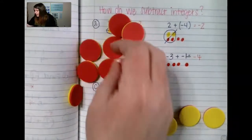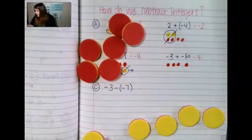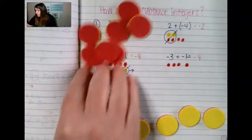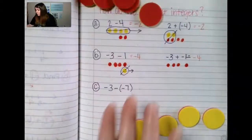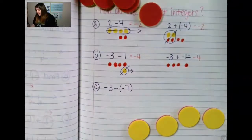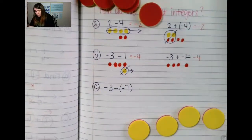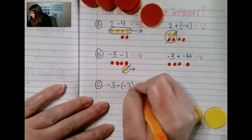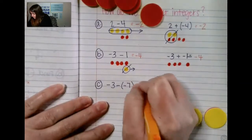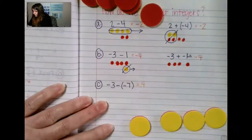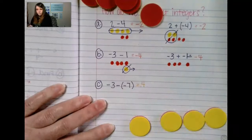Because I've added on all those 0 pairs, I can remove the negatives — 1, 2, 3, 4, 5, 6, 7 — and I'm left with 4 positives.